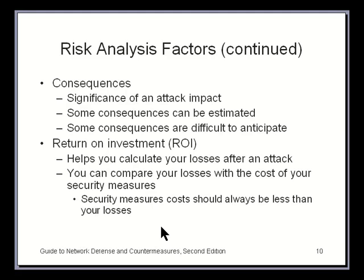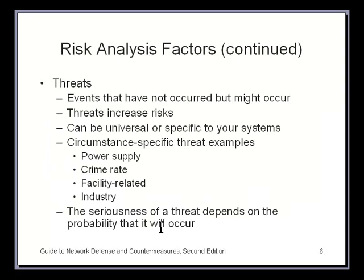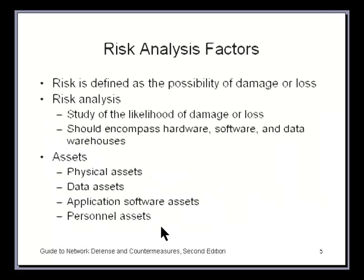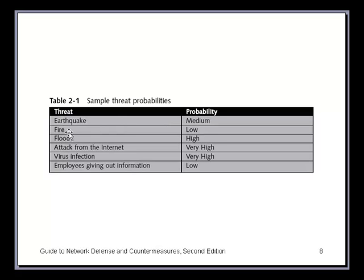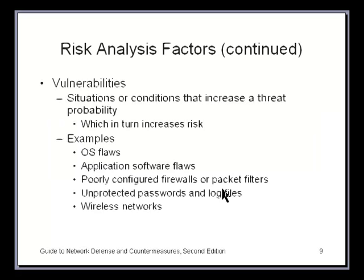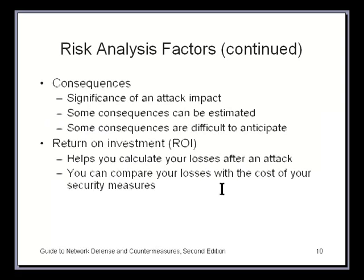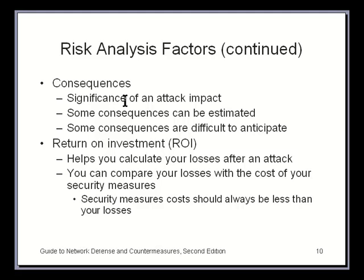We also need to consider the consequences of if something happens. The impact of a small fire in somebody's office may be low — low probability, low consequences — and may not be a big problem. However, an earthquake could shake the building, destroy everything within it, even bring the building down, so the consequences could be extremely high. The consequences of an attack from the internet — while the probability could be very high — the consequences could be very high or very low.